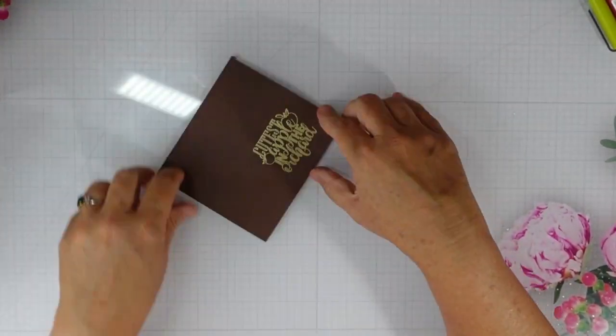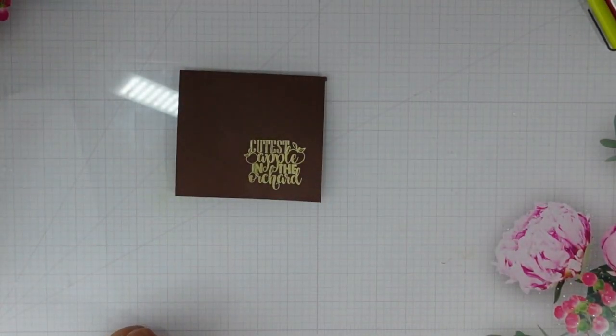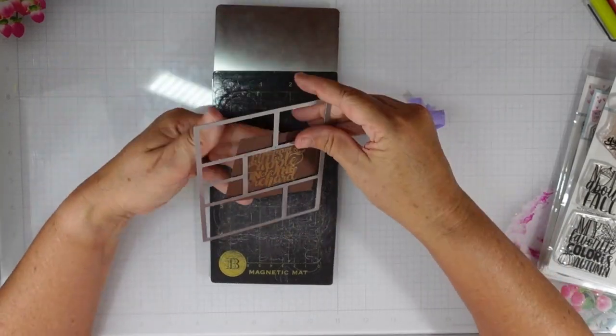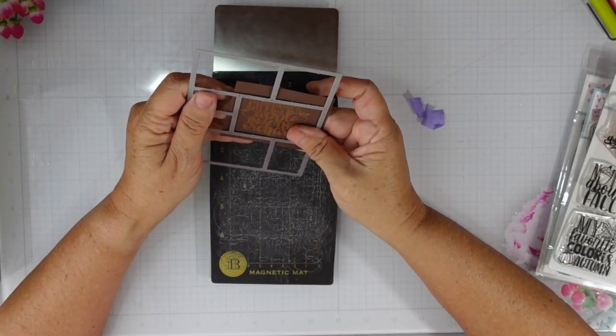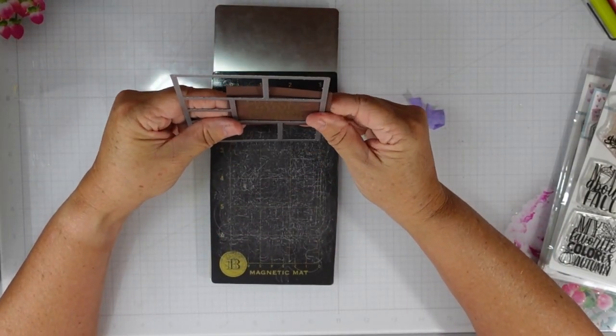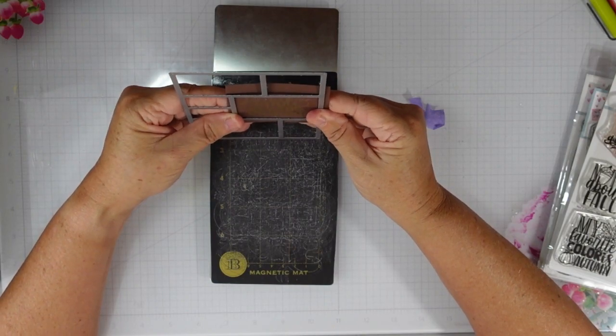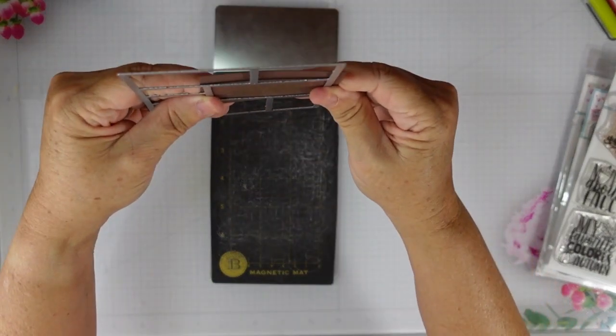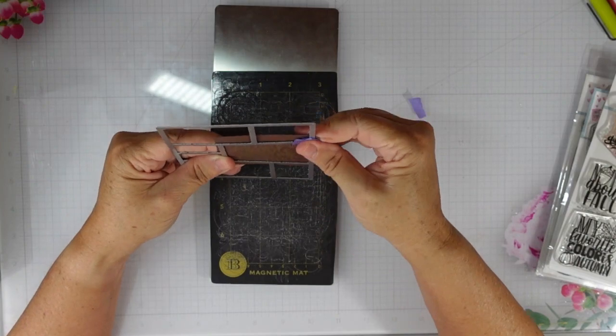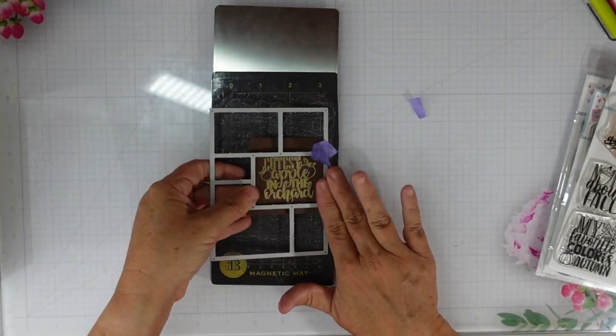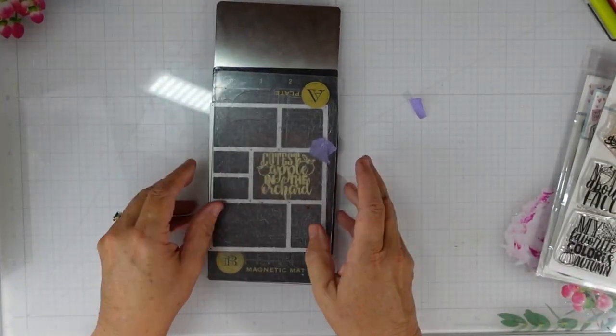I heat embossed it using Brutus Monroe gilded embossing powder. Now this is my collage die. This die comes from the Greetery, it's called Curio Dividers.